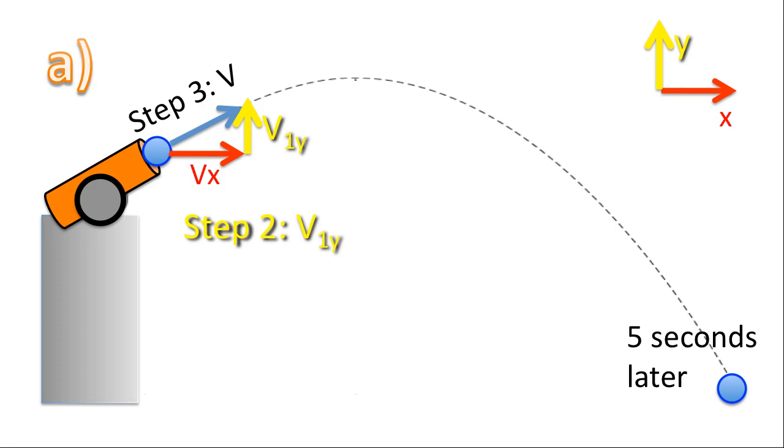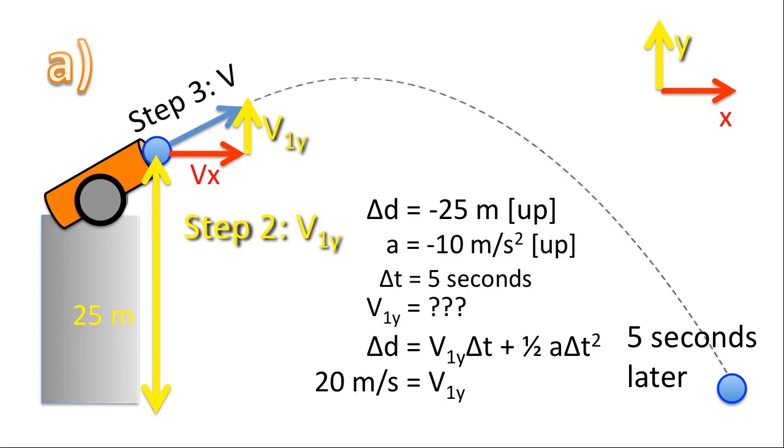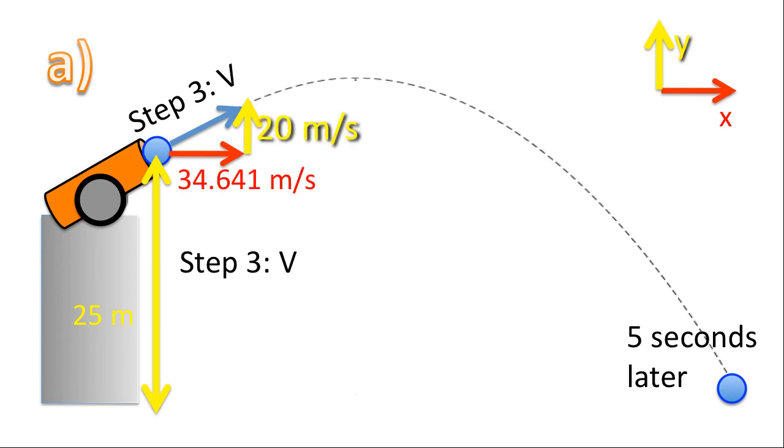Step two, solve for v1y. Well, our displacement is 25 meters. How do we know that? Well, the ball drops, ultimately, 25 meters below from where it started. There's the mathematics involved. And there's v1y. 20 meters per second. So labeling that in our triangle.